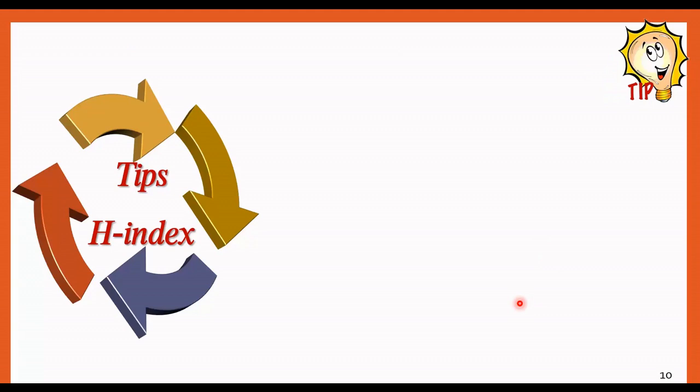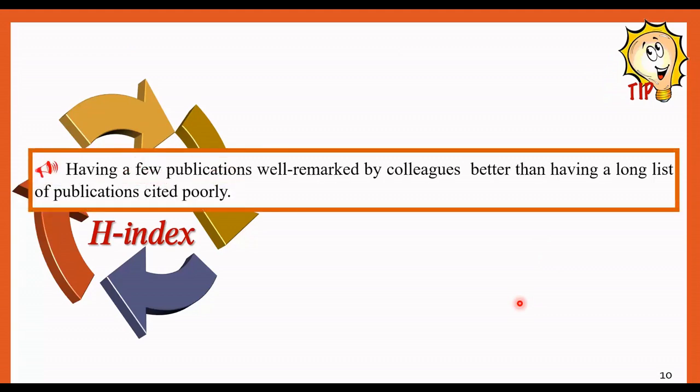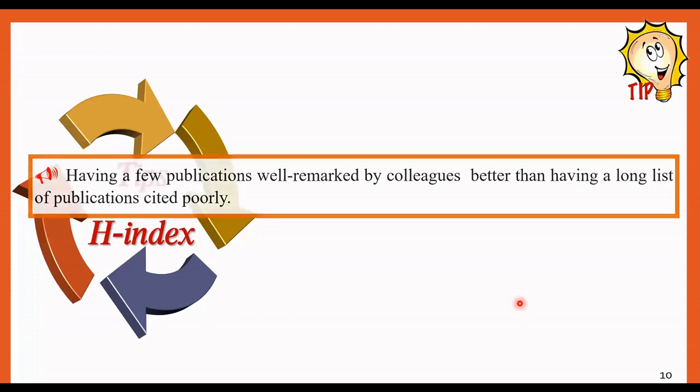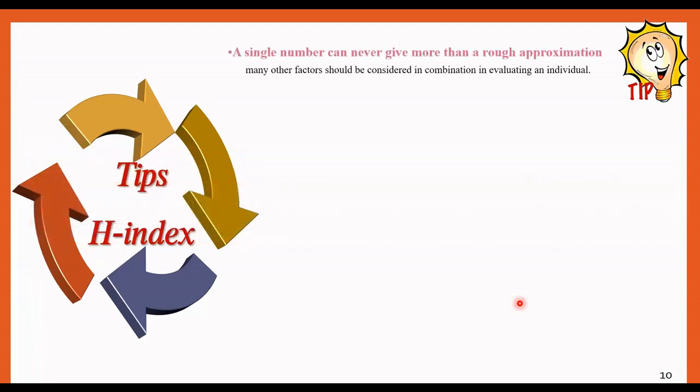There are some tips here. Before that, I want to point here that having a few publications remarked by colleagues is better than having a long list of publications cited poorly or not at all. Consider this point before starting the tips. The first tip that I want to show you is that Hirsch himself writes that obviously a single number can never give more than a rough approximation to an individual, and many other factors should be considered in combination in evaluating an individual. We should consider this point, not just take care about H-index.